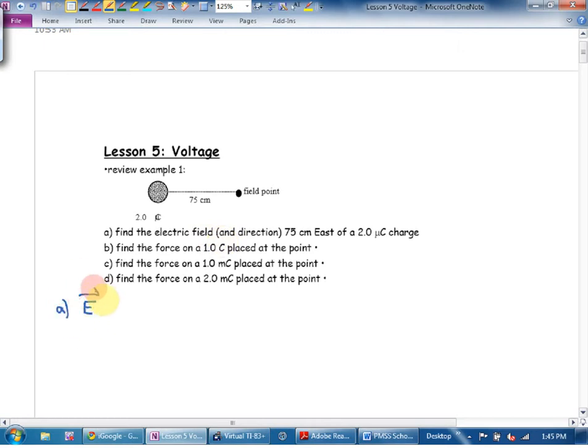Electric field from a point charge is KQ over R squared. That's right from your formula sheet. So the electric field is going to be 9 times 10 to the 9th, Q, 2 microcoulombs, 2 times 10 to the negative 6, all over .75 squared.